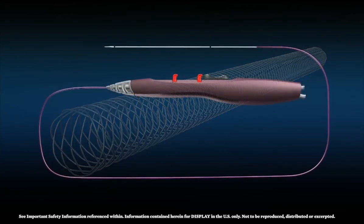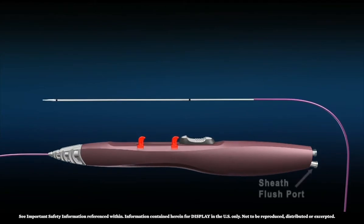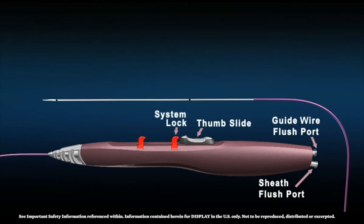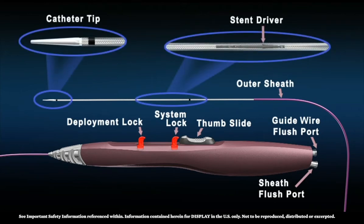Before we begin, let's review a few key aspects of the delivery system: sheath flush port, guide wire flush port, thumb slide, system lock, deployment lock, outer sheath, stent driver, catheter tip, and stent.